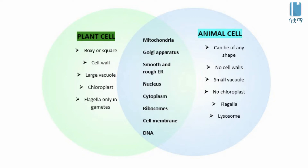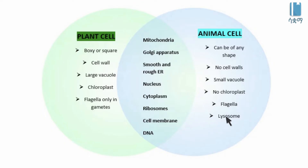Animal cells have no cell walls, and have only small vacuoles unlike the large vacuoles in plant cells. Animal cells have no chloroplasts. Flagella, centrioles, and lysosomes are only found in animal cells.